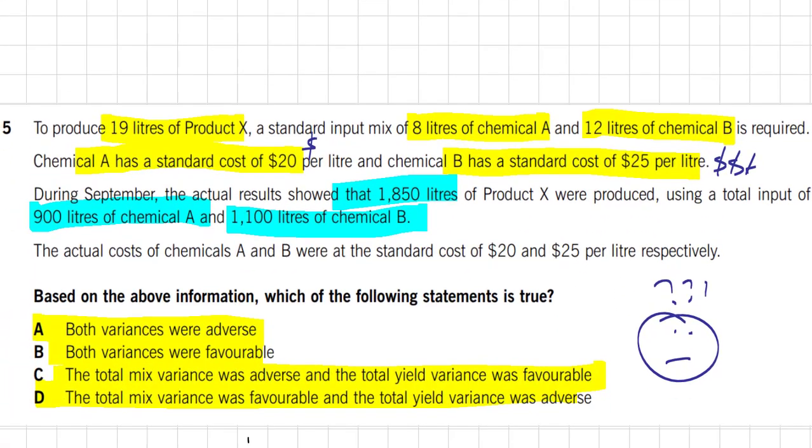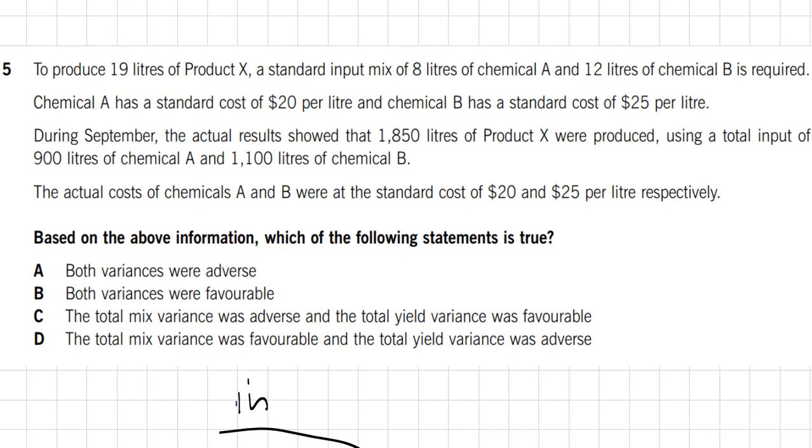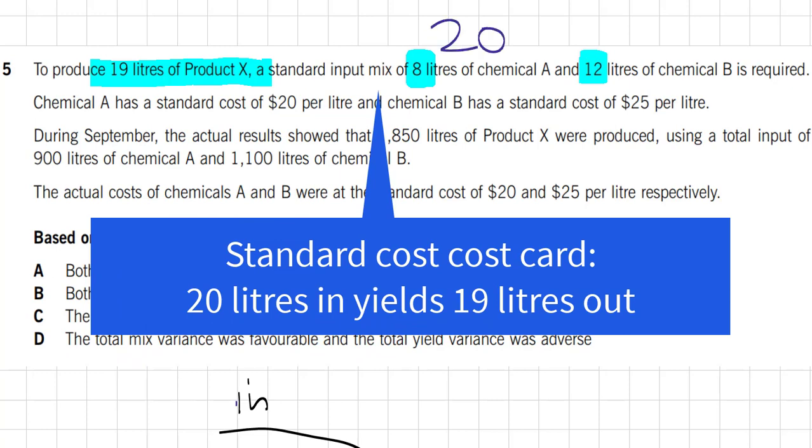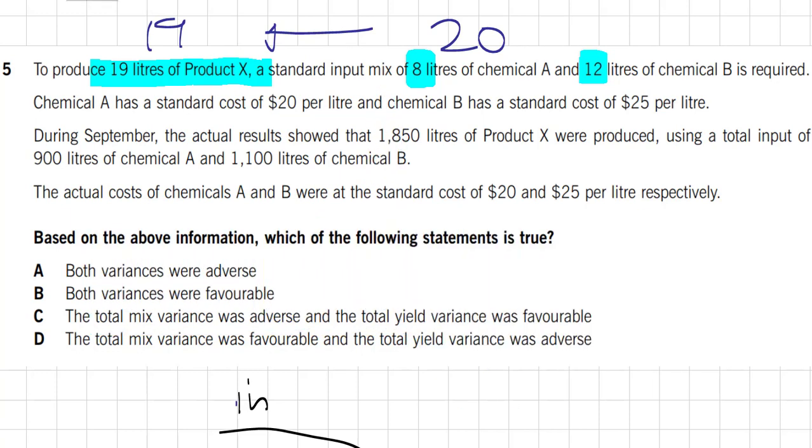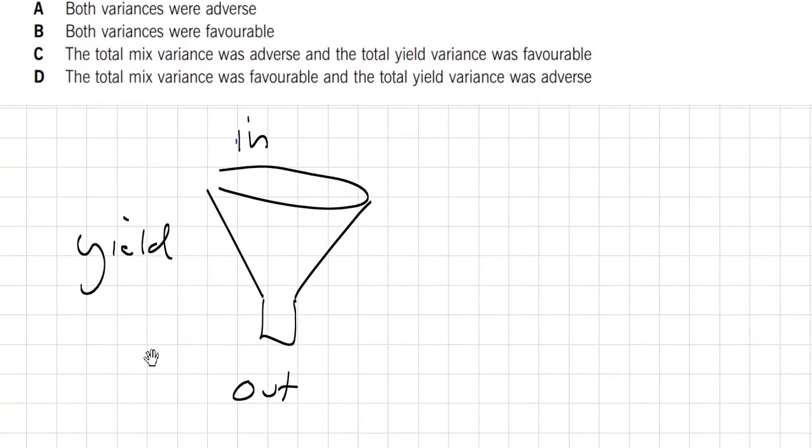So if we come back to our question here, to produce 19 units, we have to put in 8 plus 12. Guys, that is 20. So 20 goes in, 19 comes out. How much did we actually get, everybody? We got 1,850. Look at that. We got 1,850 out. How much did we put in? We put in 900 plus 1100. Guys, that is 2000. So we put in 2000.